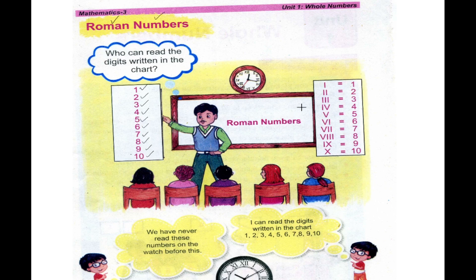Now we have Roman Numbers right here. These are simply some alphabetical letters: I, V, and X. These 3 letters will make Roman Numbers. There is one straight line, here there are two straight lines, and these are three straight lines.